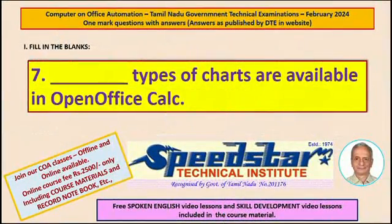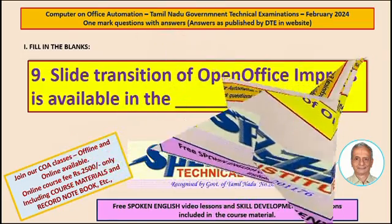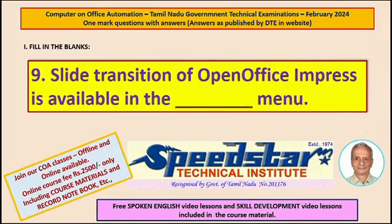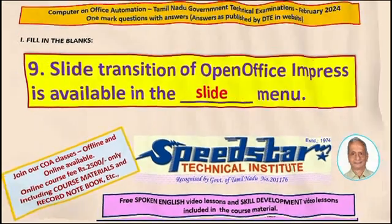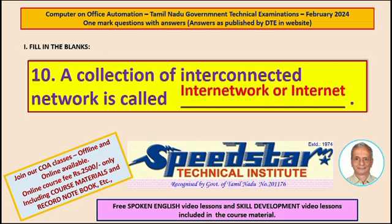Question 7: Dash types of charts are available in OpenOffice Calc. The answer is 8. Question 8: The default extension of OpenOffice Base is dash. The answer is .ODB — write a full stop followed by O-D-B in lowercase. Question 9: Transition of OpenOffice Impress is available in the dash menu. The answer is Slide. Question 10: A collection of interconnected networks is called dash. The answer is Internet.